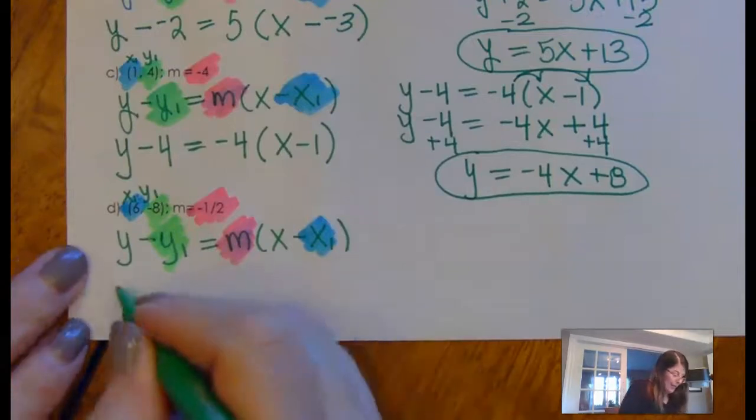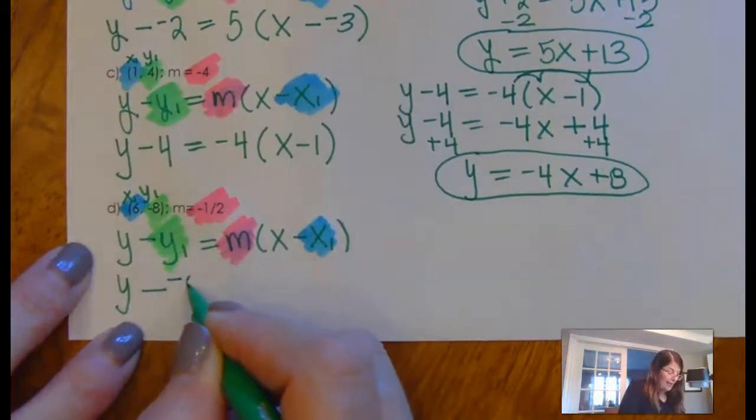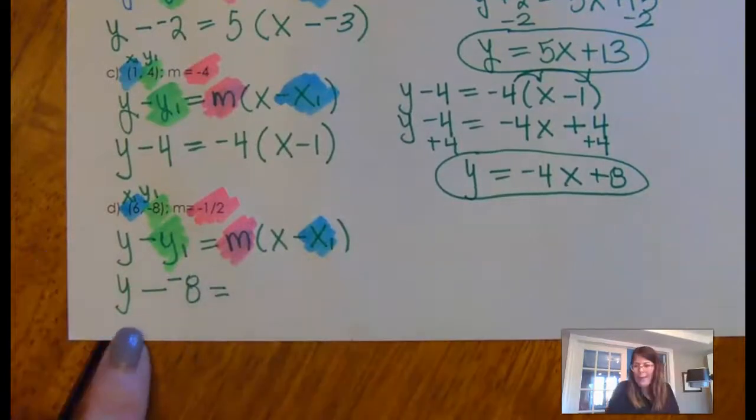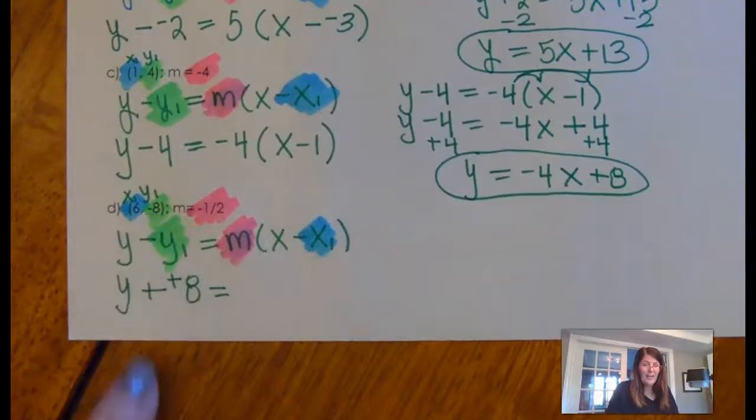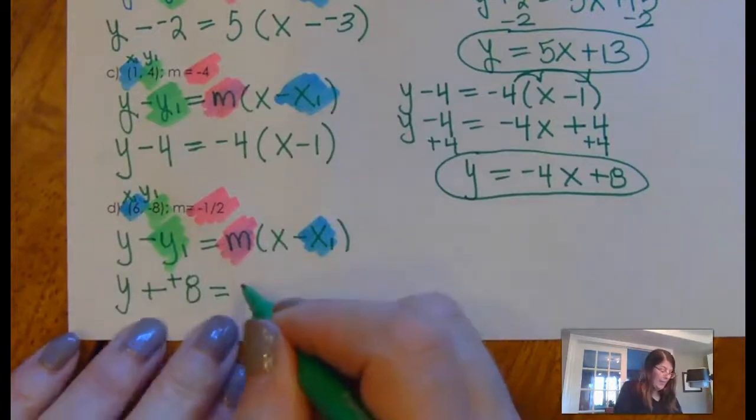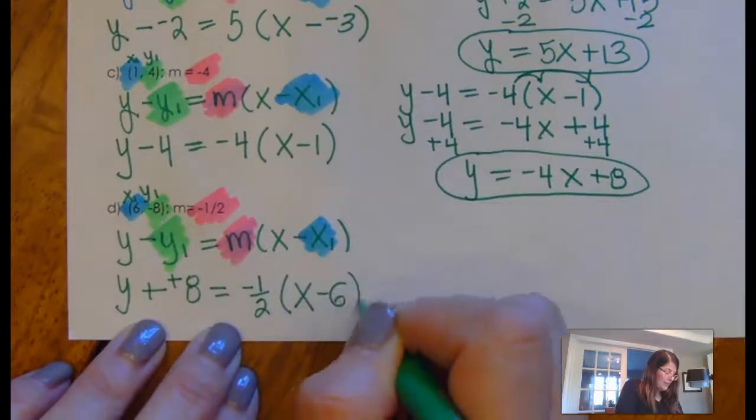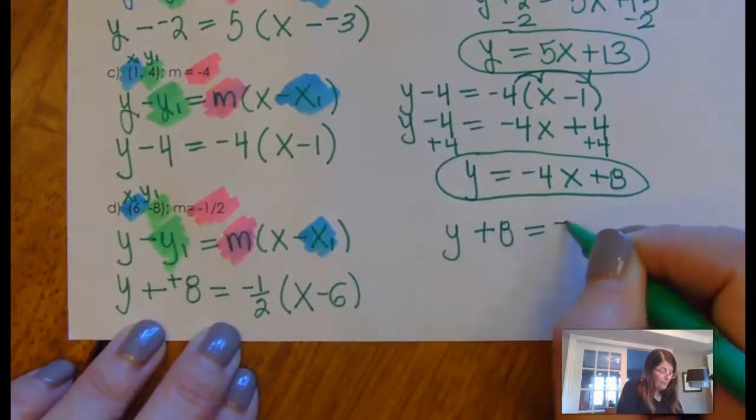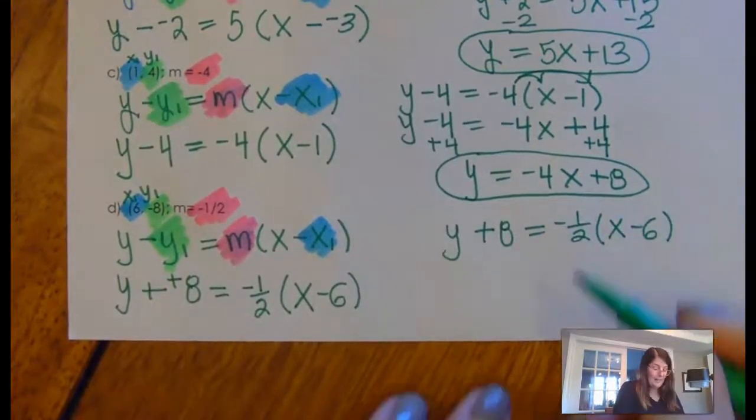And now, I'm ready to plug this in. Y minus. Now, it's Y minus negative 8. By the way, you know that means plus 8. Right? Because whenever there's a negative, it becomes the opposite sign. It's equal to negative 1 half X minus 6. So, Y plus 8 is negative 1 half X minus 6.